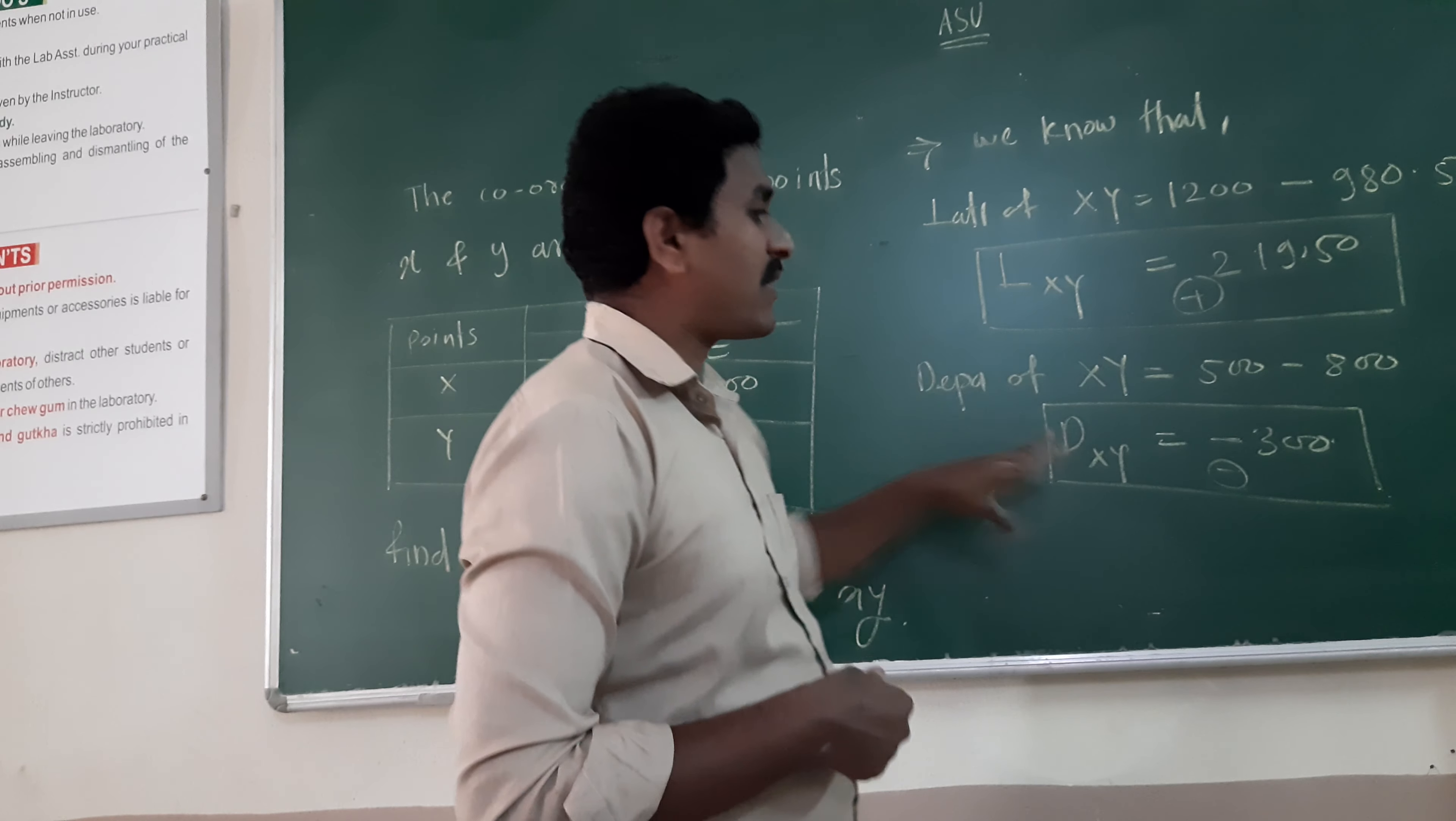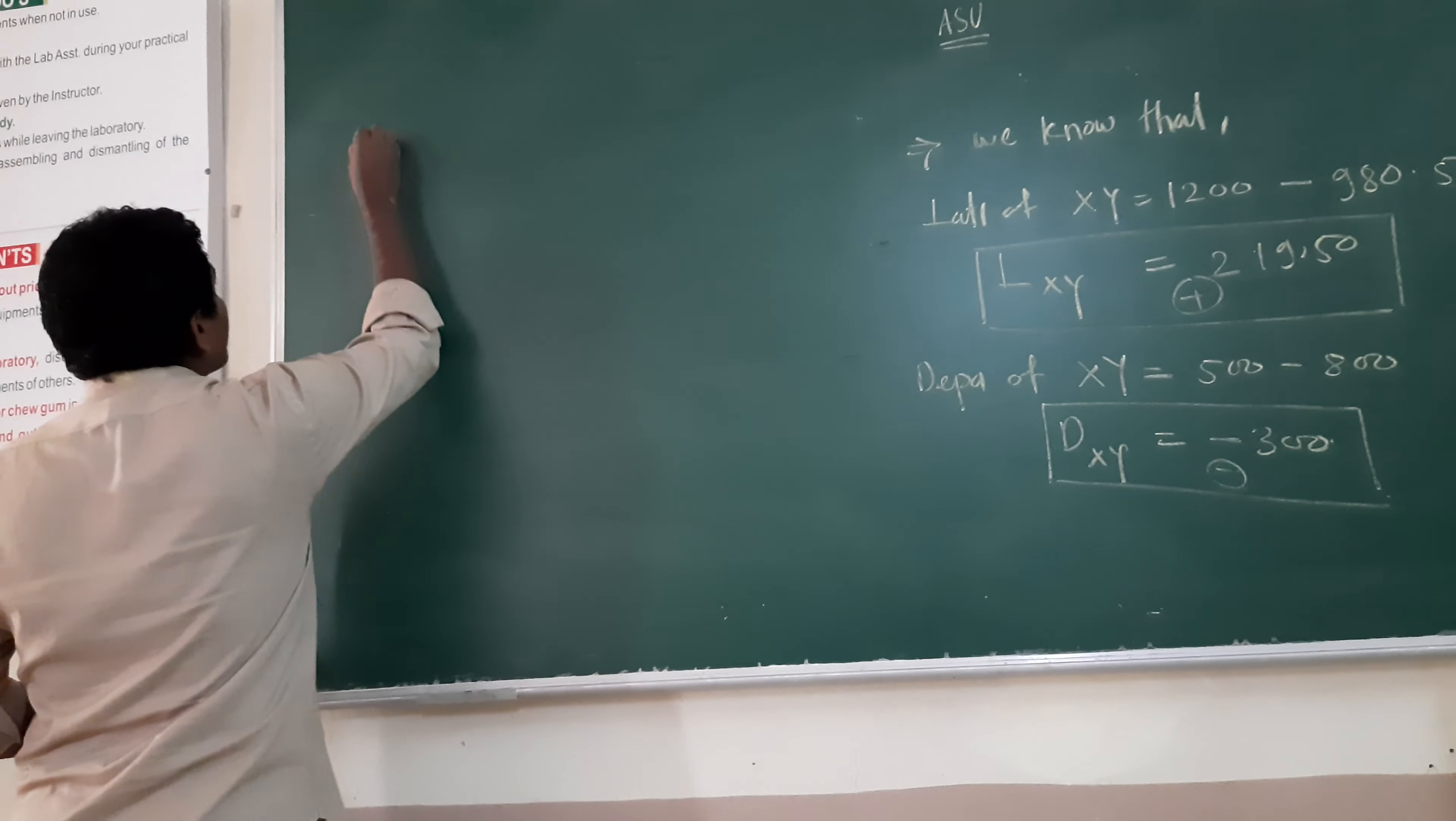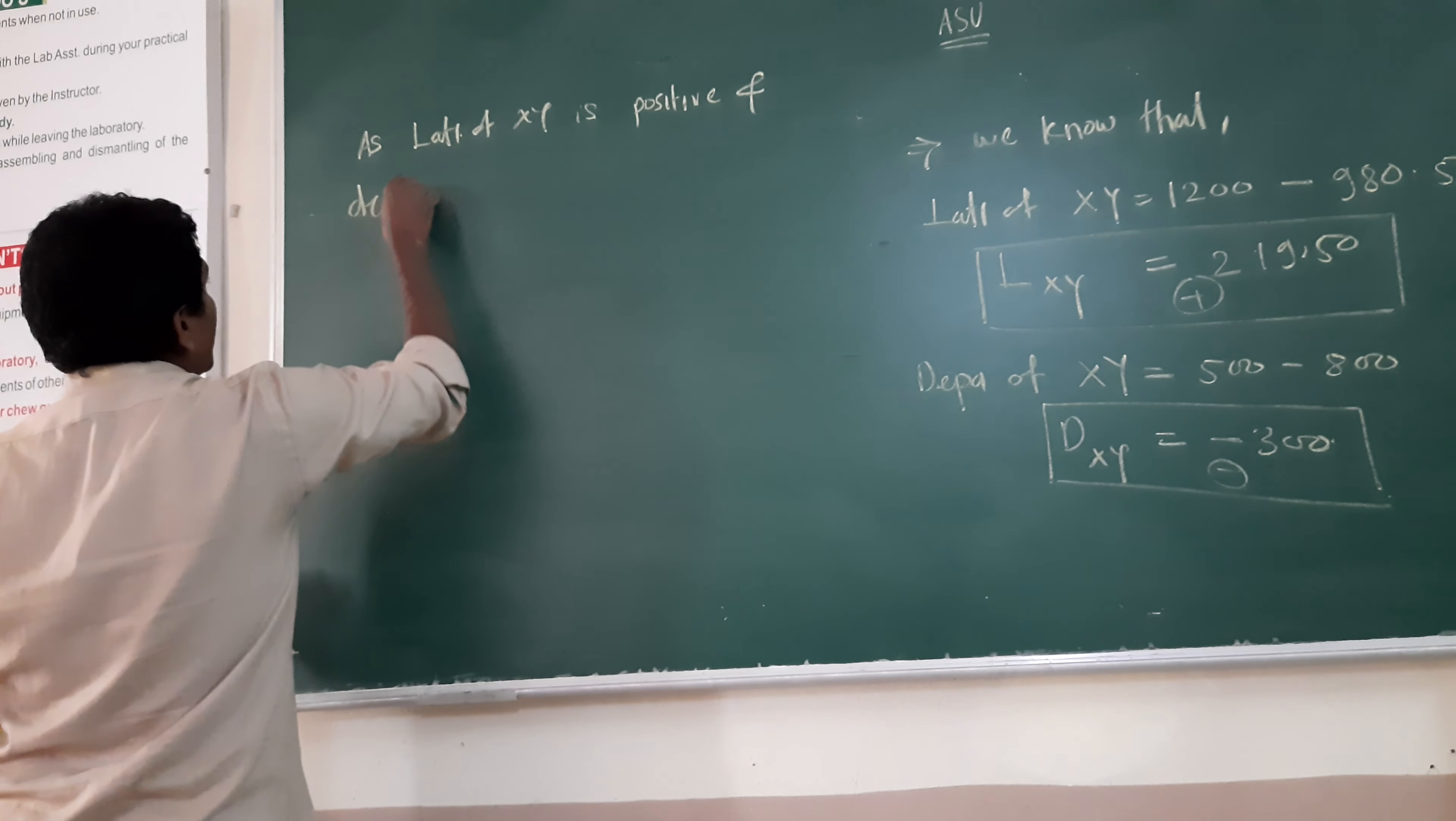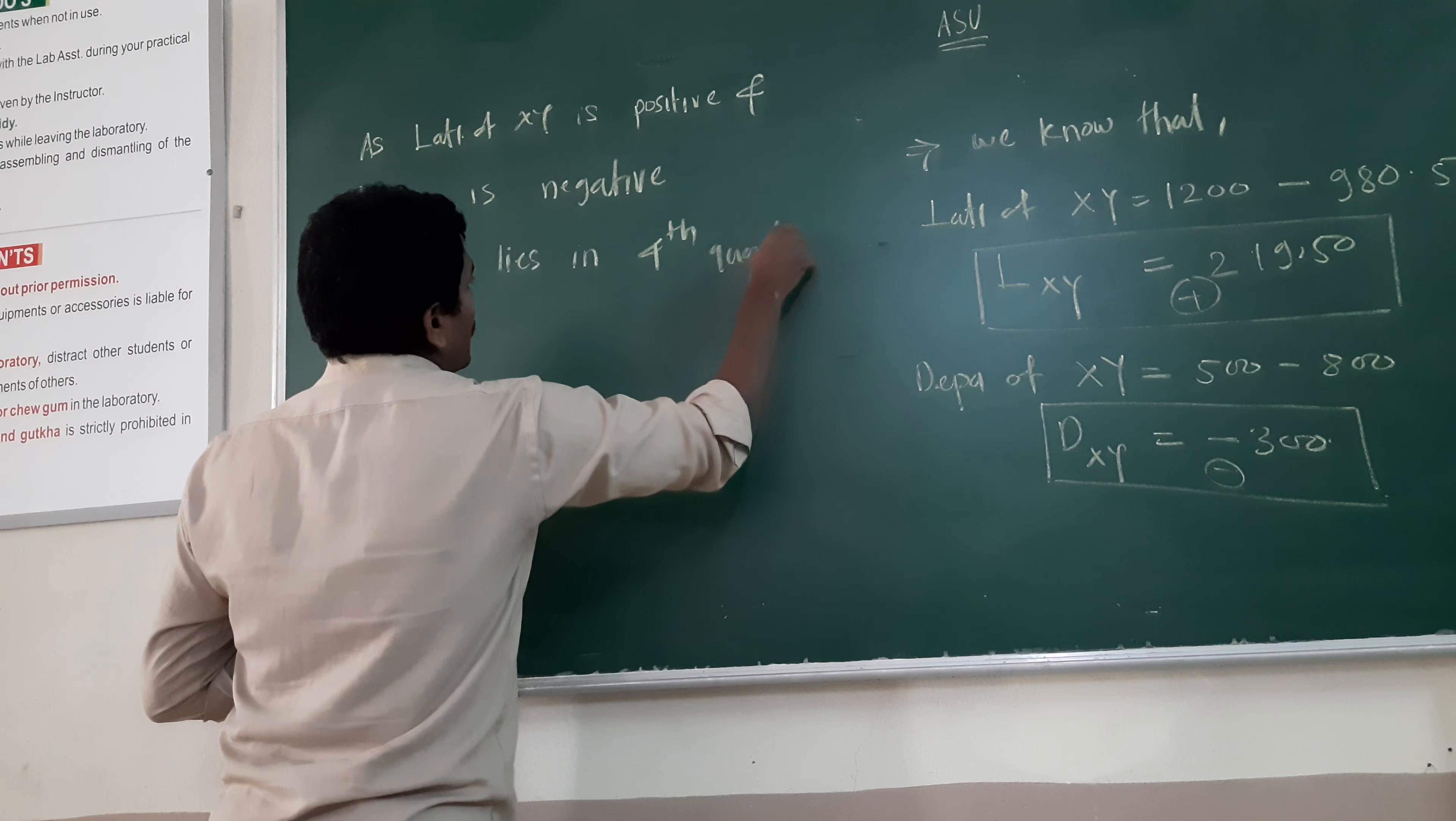Therefore, the line XY will lie in the fourth quadrant. As latitude of XY is positive and departure is negative, therefore XY lies in the fourth quadrant.